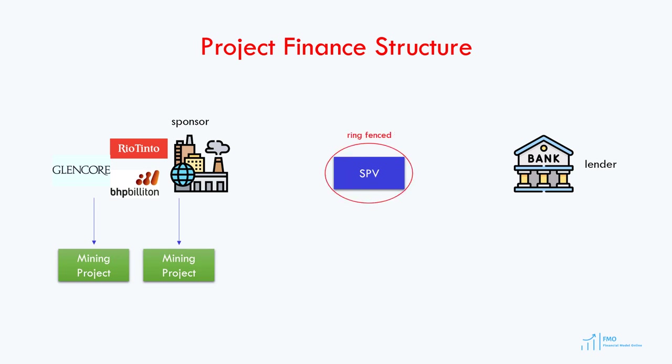Ring-fencing is achieved when the SPV has its own board of directors, its own bank accounts, its own financial reports, and accounting. The SPV will be developing the mining project that the sponsor wants to develop by means of project finance debt. The SPV will raise the debt financing from the lender and equity financing from the sponsor to develop the project.